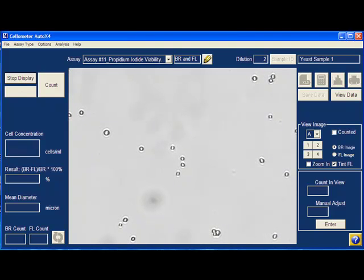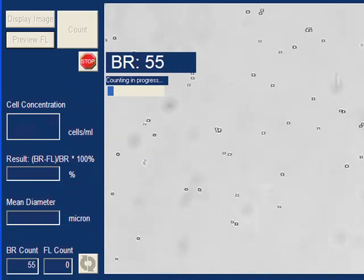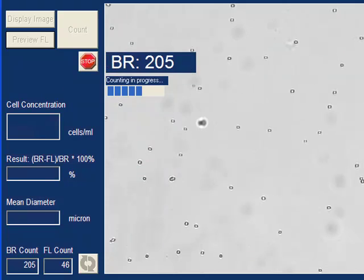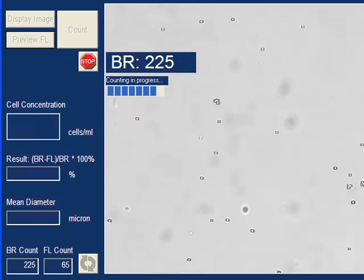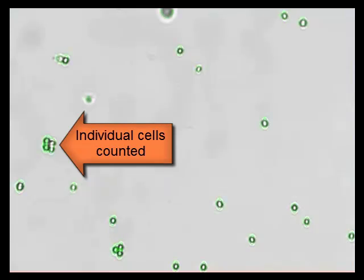The Auto X4 counts all of the yeast cells in the brightfield image to determine total number. The brightfield counted image indicates individual cells counted within cell clumps.